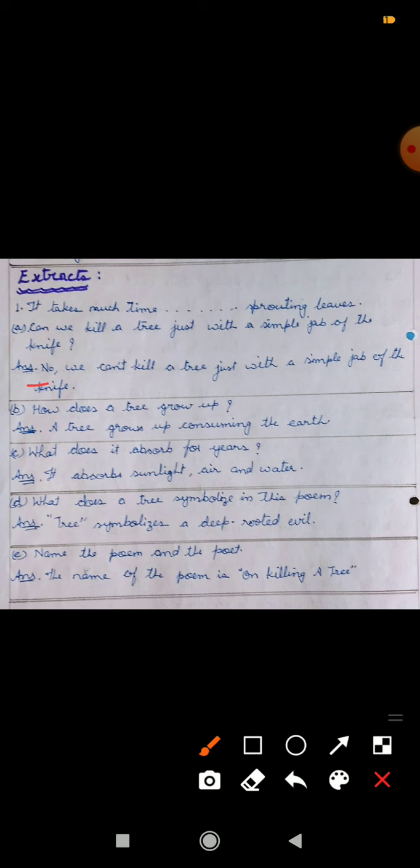Next, How does a tree grow up? Tree kaise bada hota hai? By consuming the earth. Earth se, woh apne saare minerals, saare needed elements usko miltay hai. Pani usko earth se miltay hai. Pani hum direct uske pato pe dalye hai, toh woh it wouldn't worth. Patiyaan refresh ho jatye hai. Lekin, pani ko absorb, woh jad sa hi karega. Right?